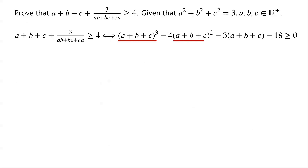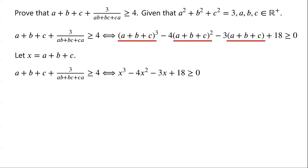Note that the inequality contains (a + b + c) cubed, (a + b + c) squared, and (a + b + c). So for simplicity, we let x = a + b + c. Then we have: the inequality holds if and only if x³ − 4x² − 3x + 18 ≥ 0. How do we prove that this cubic algebraic expression is greater than or equal to 0?